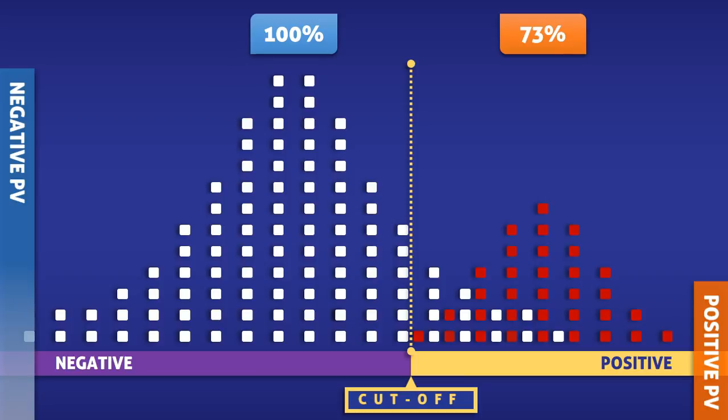The positive predictive value, however, has dropped to 73%, meaning that for every 100 people who test positive, 27 people will actually not have the condition. So although the test is accurately excluding the condition in people who test negative, it is incorrectly identifying the condition in people who test positive.